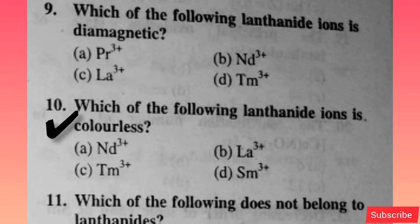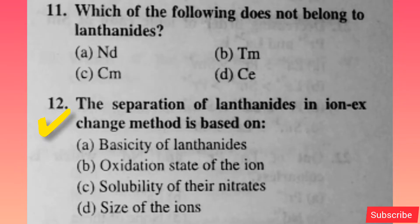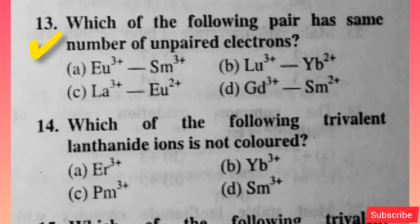Which of the following has the smallest ionic size? Option A is correct. Which of the following lanthanide ions is diamagnetic? Option C is correct. Which of the following lanthanide ions is colorless? Option B is correct. Which of the following does not belong to lanthanides? Option C is correct.